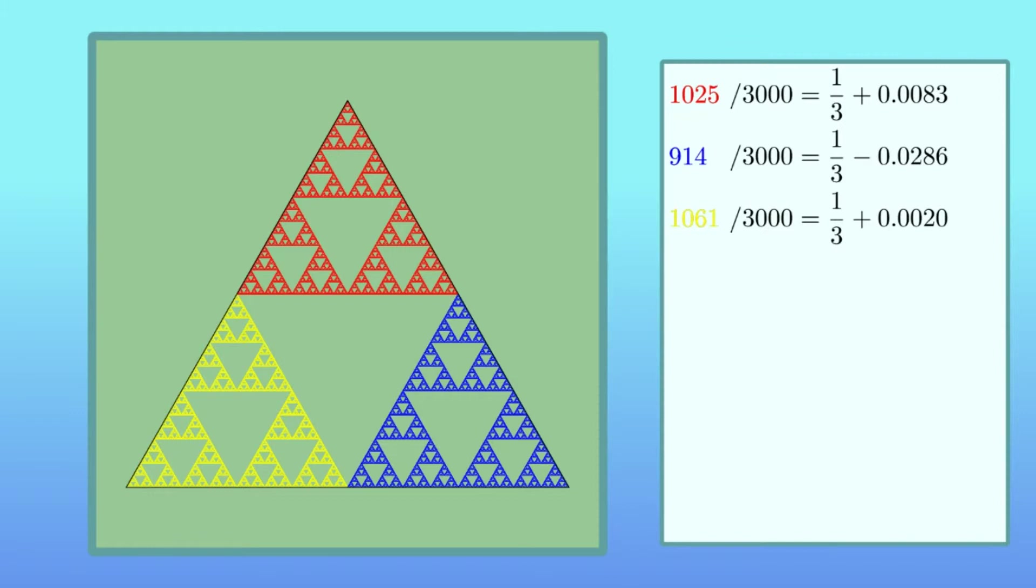Of course, if we make very bad choices, for example, if we keep choosing only the left vertex, then this will not be the case. But the probability that we do such a bad choice is very small, since we choose the vertices uniformly at random in each step. This is why the right formulation for our observation so far is that, with high probability, we will spend around third of the time in each small triangle.